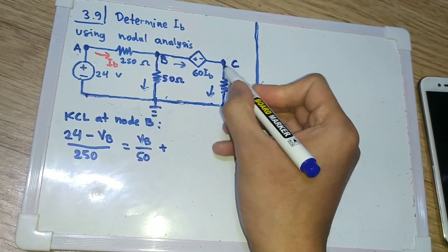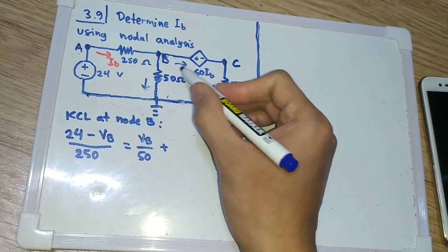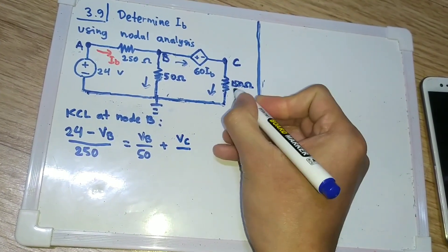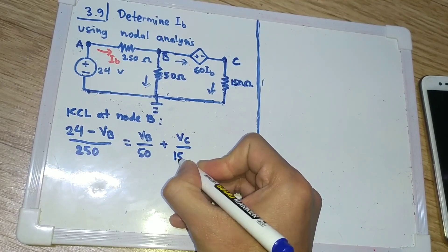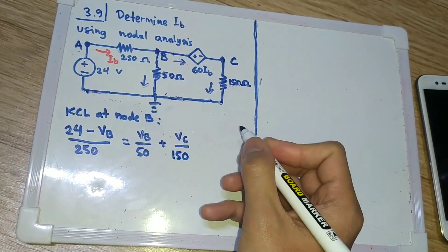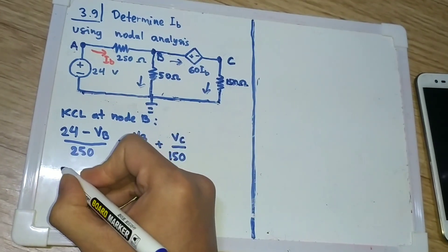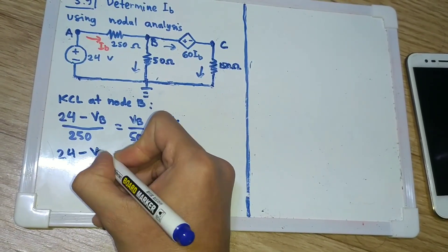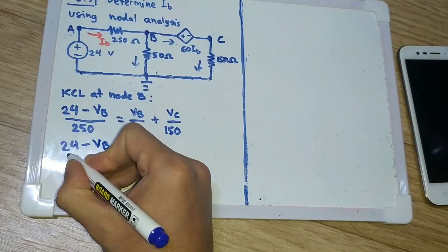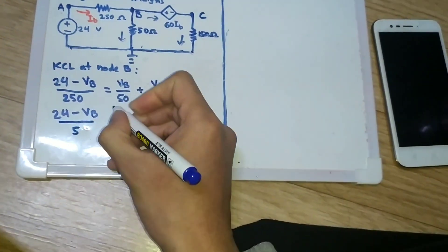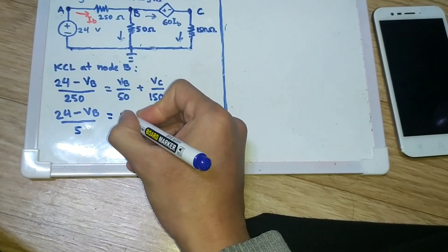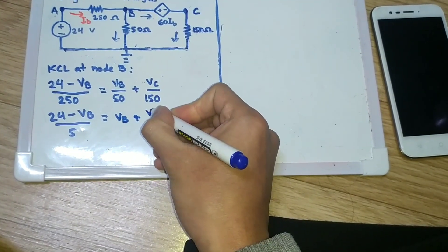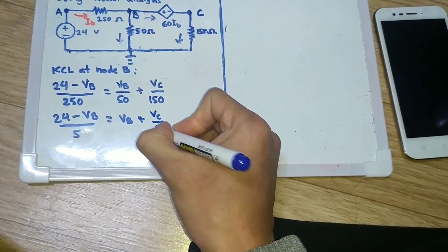Now I will use this expression because it is much easier to work with. We have VC divided by 150. Multiply both sides by 50, so we have (24 - VB) / 5, and then VB / 5, and then VC / 3.